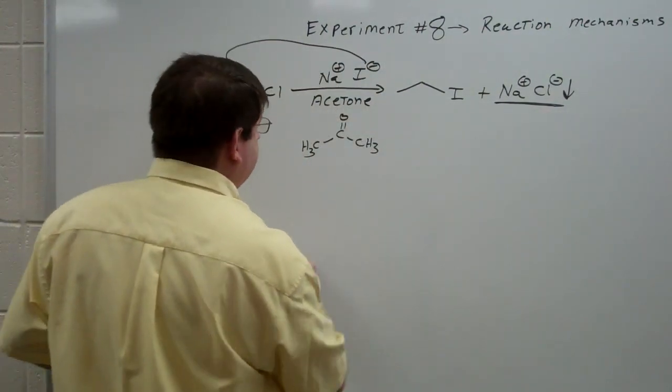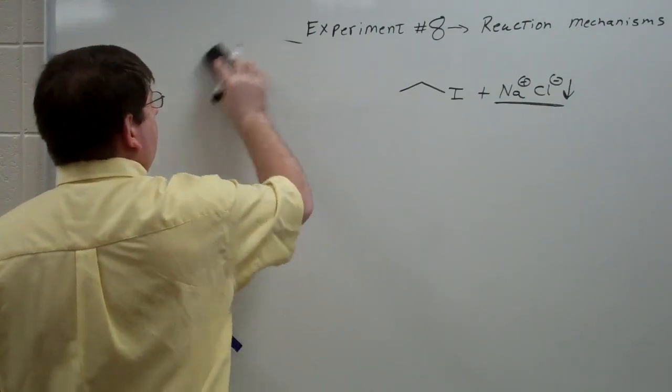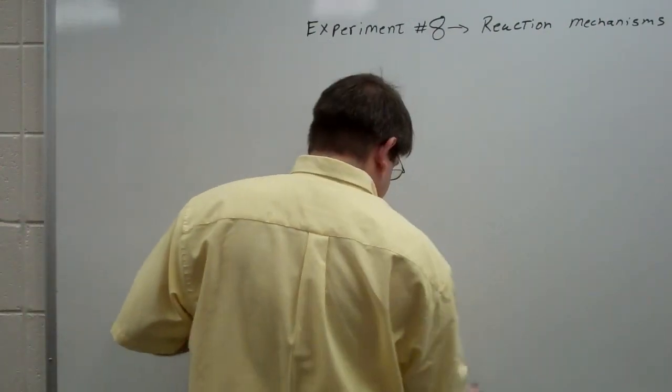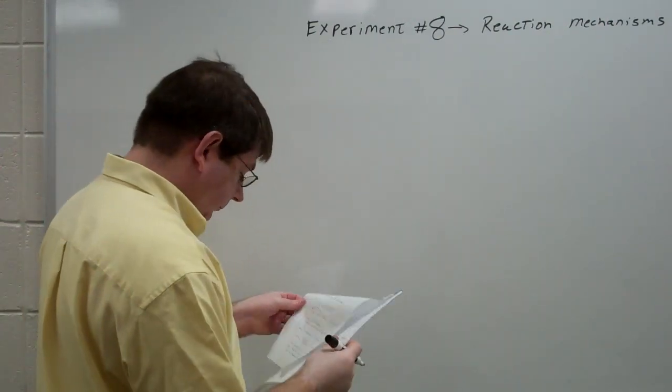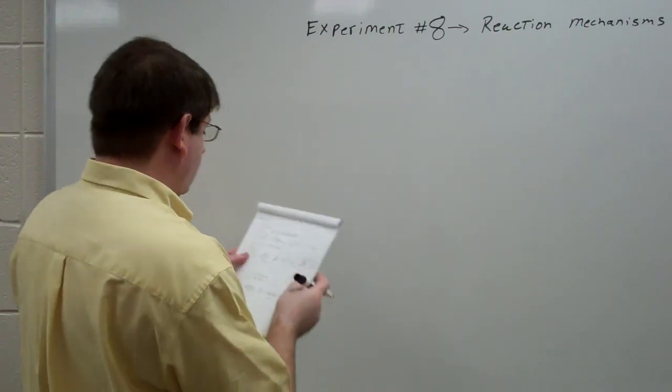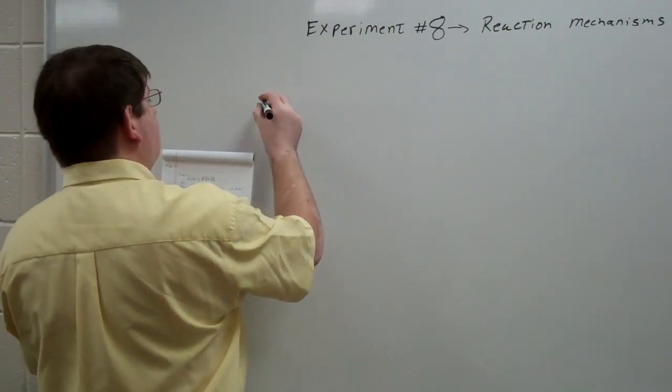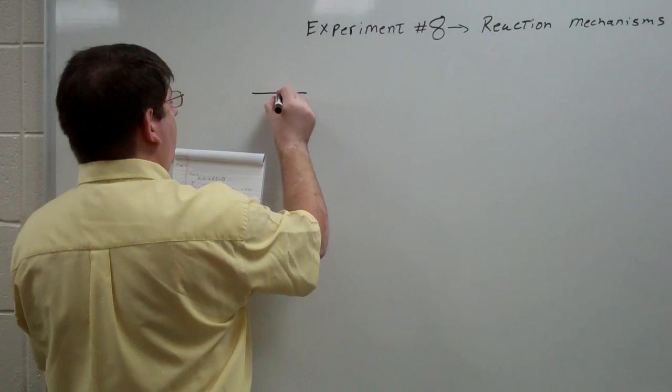Now the SN1 reaction, again, substitution of monomolecular. Let's take an example where we have T-butyl bromide.